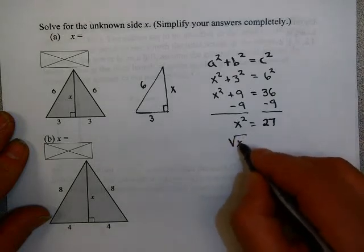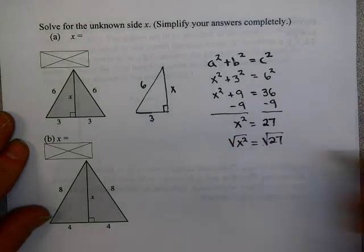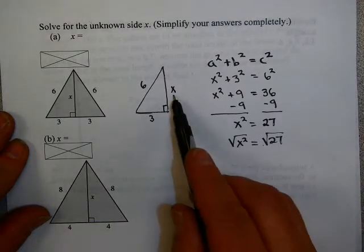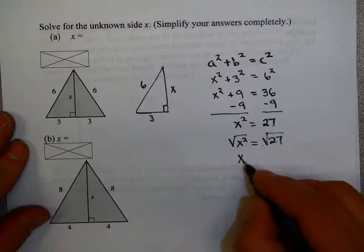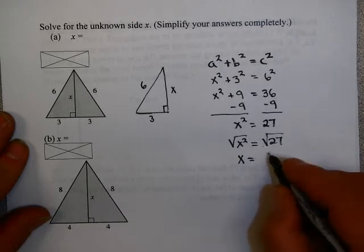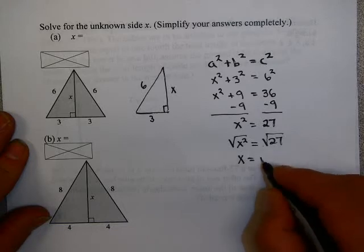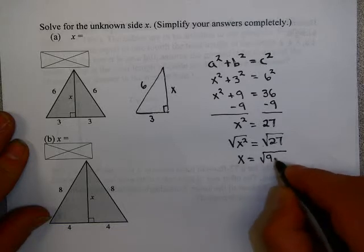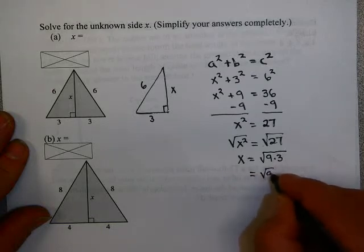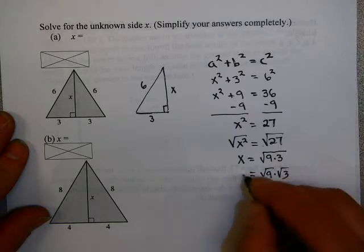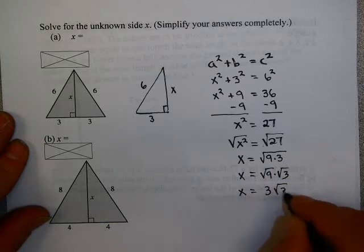And x squared equals 36 minus 9, which is 27. Take the square root of each side. Now, normally, I would write plus or minus here. But in this case, x represents a physical distance. So clearly, it must be positive. And the square root of 27 might be acceptable. Or you can simplify that by saying 9 times 3 is 27. And since 9 is a perfect square, you can pull it out and get the answer 3 times the square root of 3.